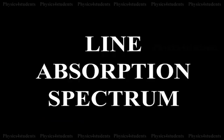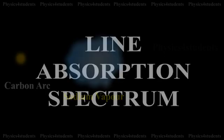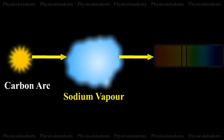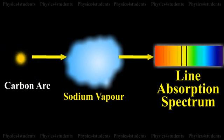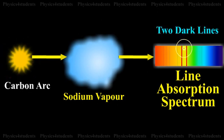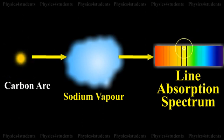Line Absorption Spectrum: When light from a carbon arc is made to pass through sodium vapor and then examined by a spectrometer, a continuous spectrum of the carbon arc with two dark lines in the yellow region is obtained.